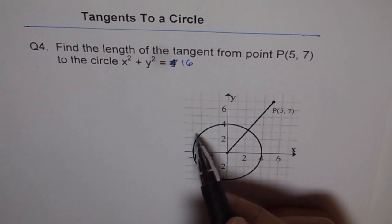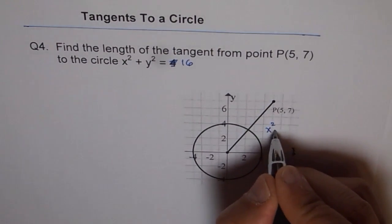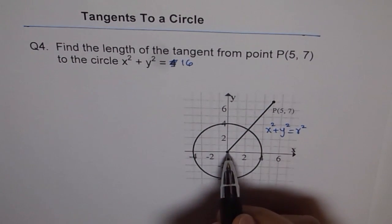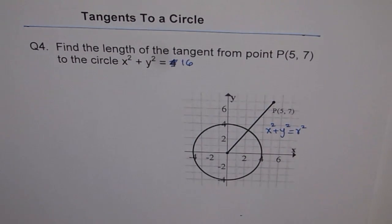I changed it because the circle given to us has a radius of 4, and the equation of a circle is always x² + y² = r². The radius is 4, so it should be 16. It's a typing error.